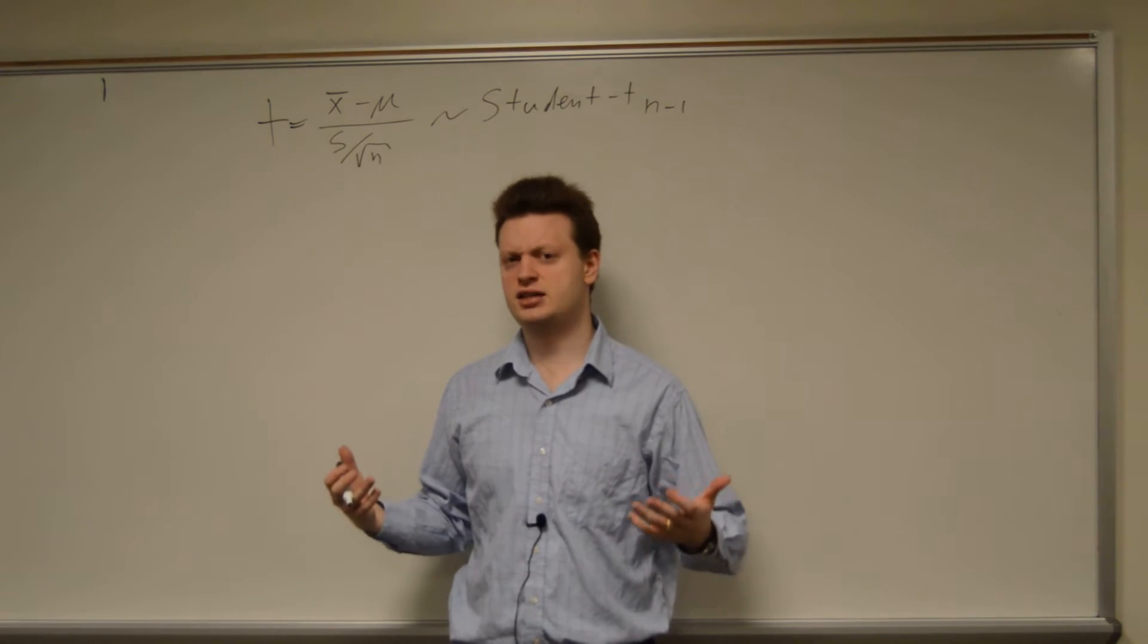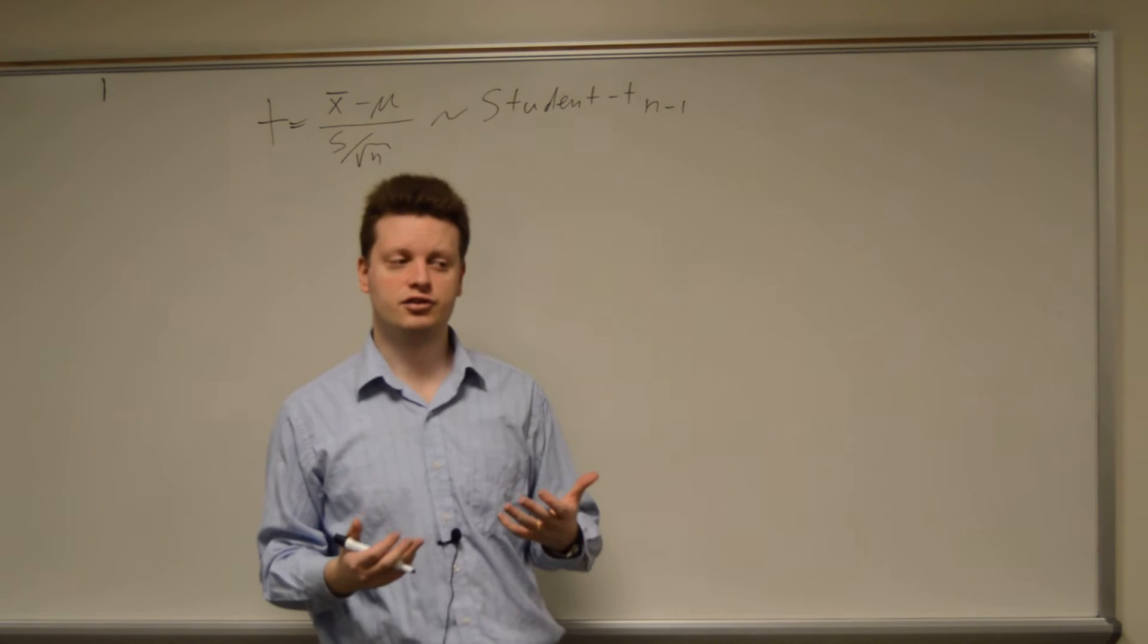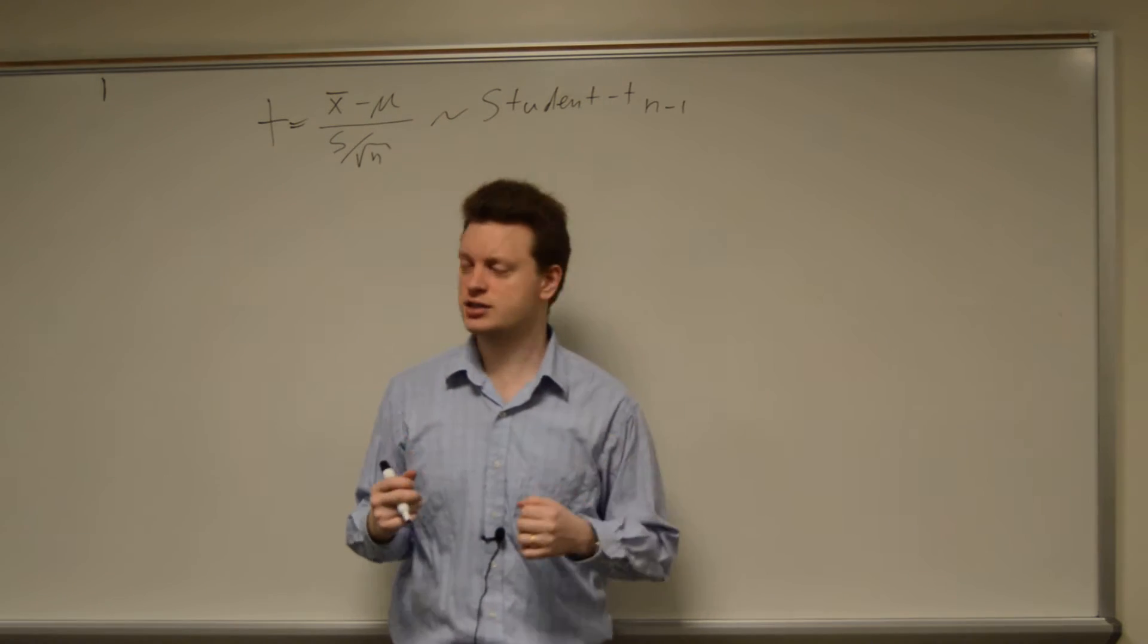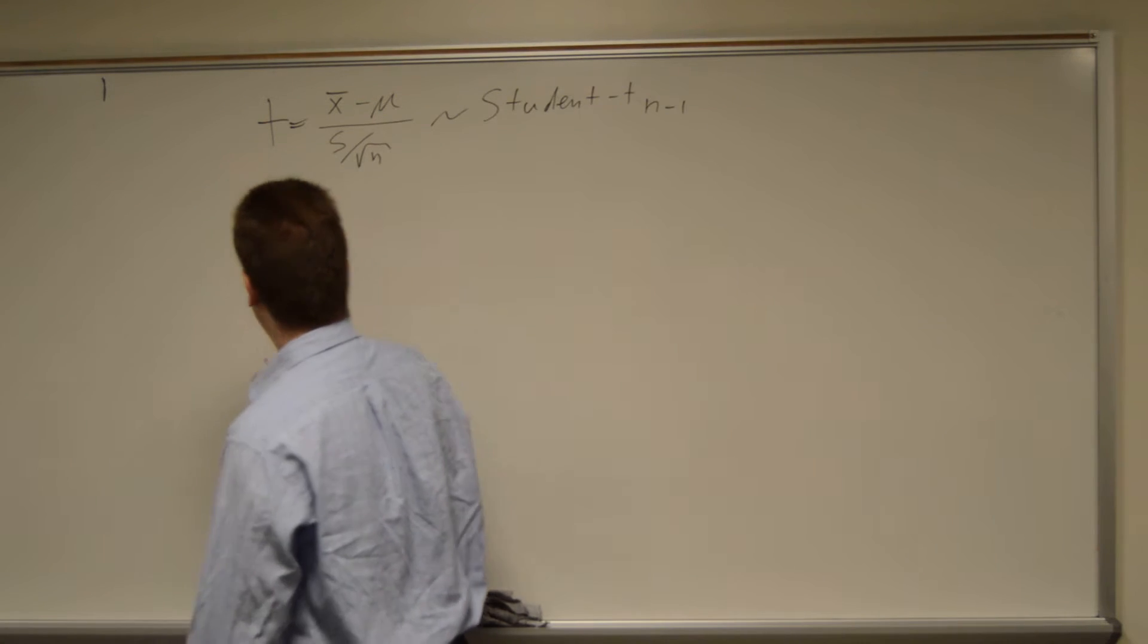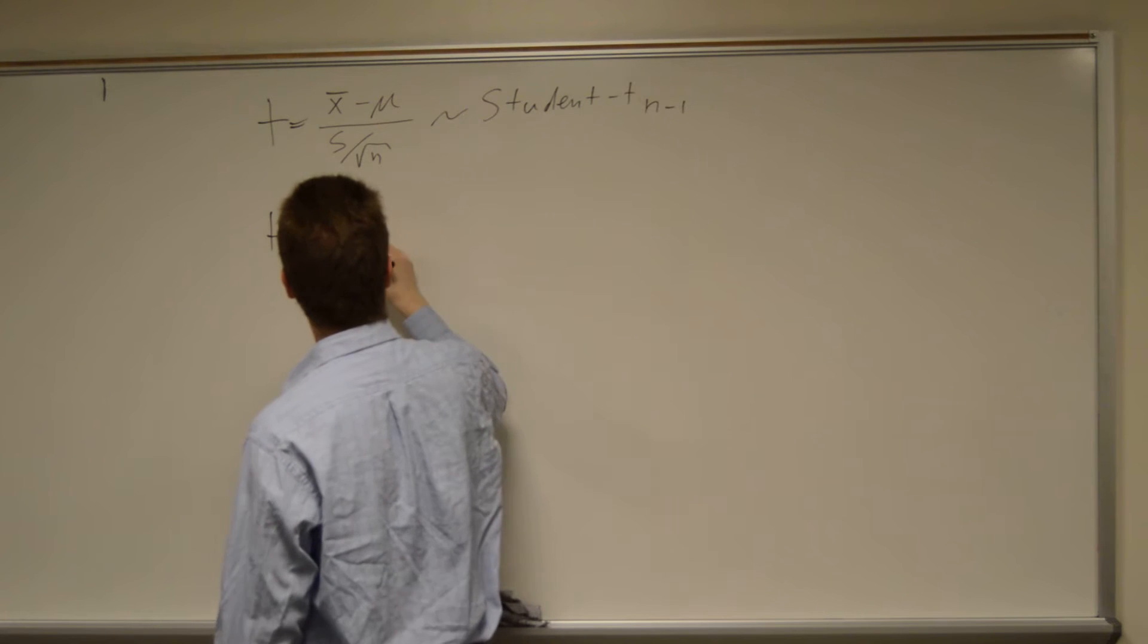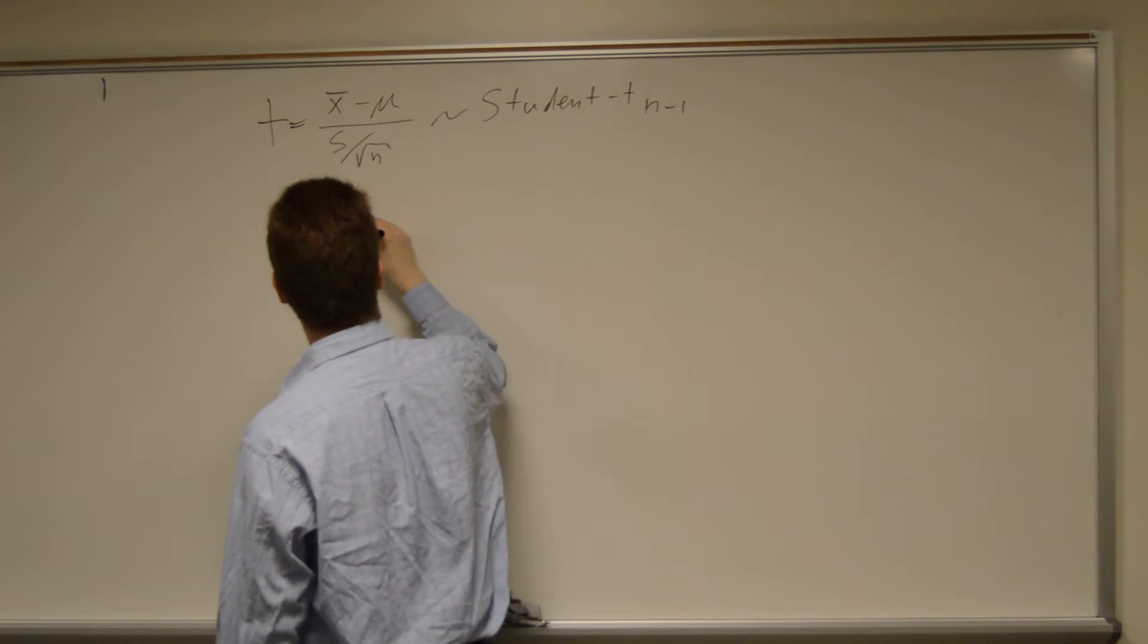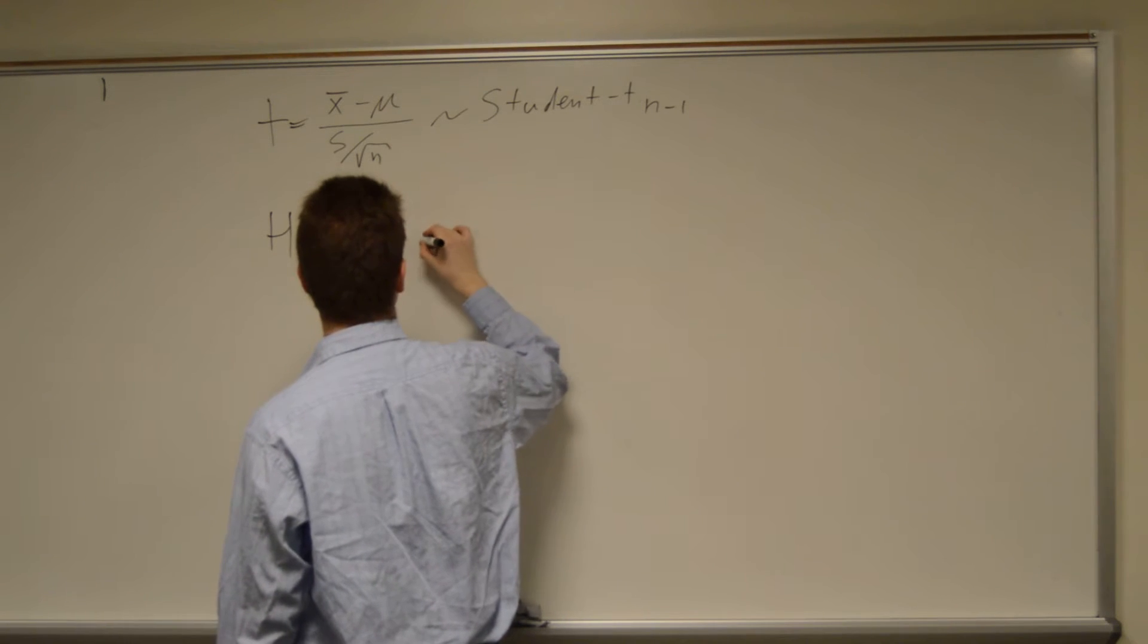How does this hypothesis test now work? Let's assume we have the following initial hypothesis. Our h-naught, which is our null hypothesis, would be that mu is less than or equal to, say, 80.